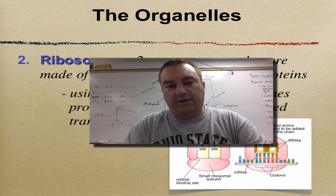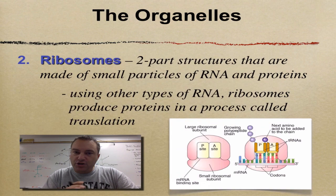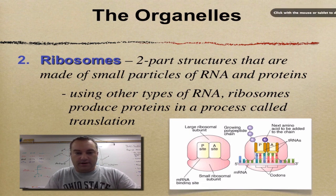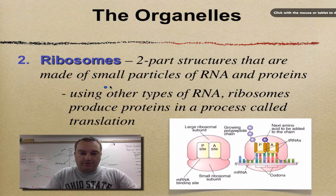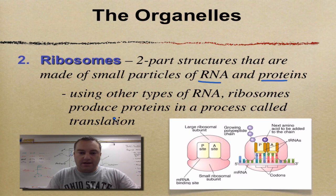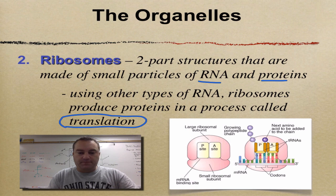Let's start off with ribosomes — nothing new from this chapter, it's just a review from what we learned in chapter 13. You want to remember that ribosomes are made up of RNA, specifically rRNA, and some proteins, and this is the place where translation occurs.